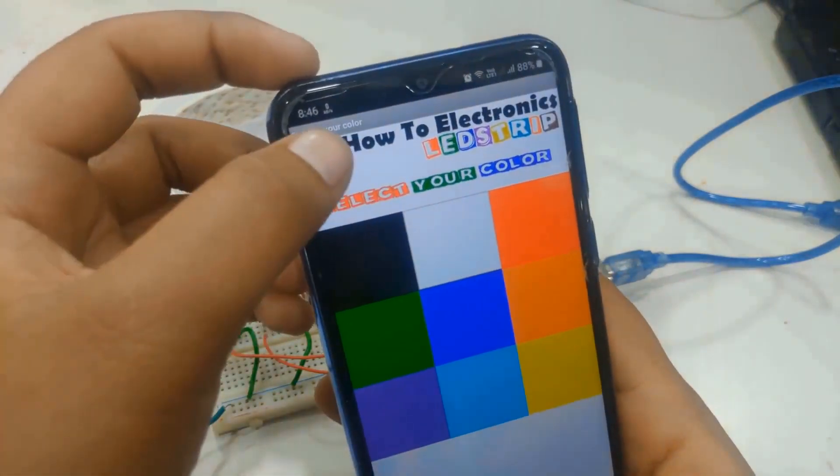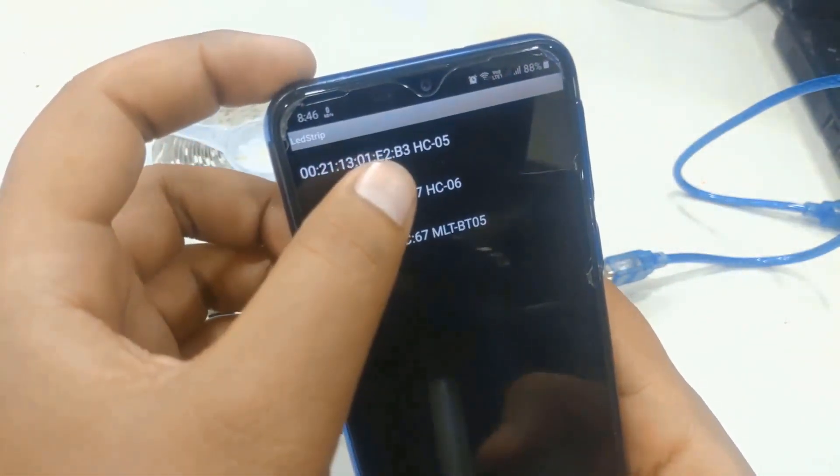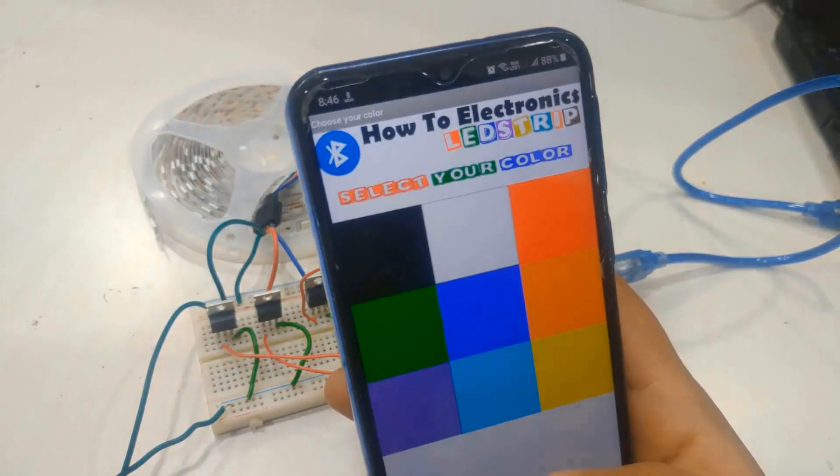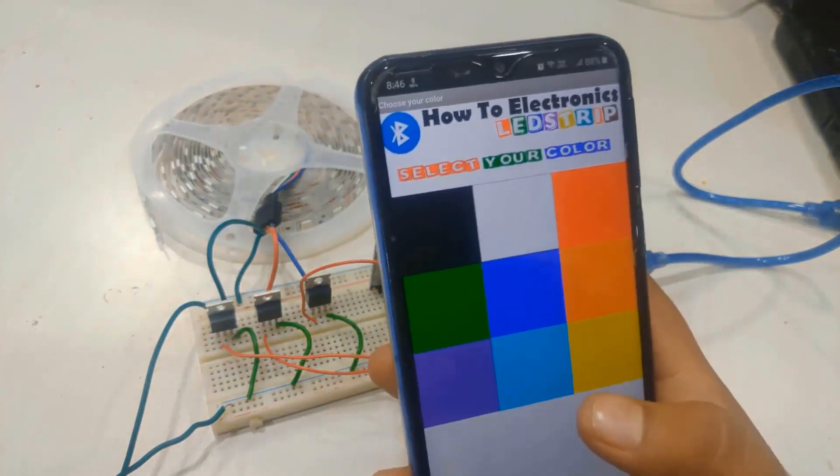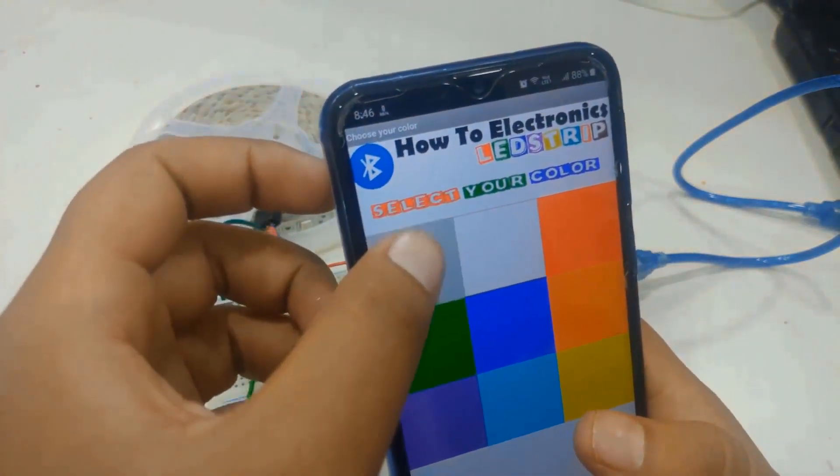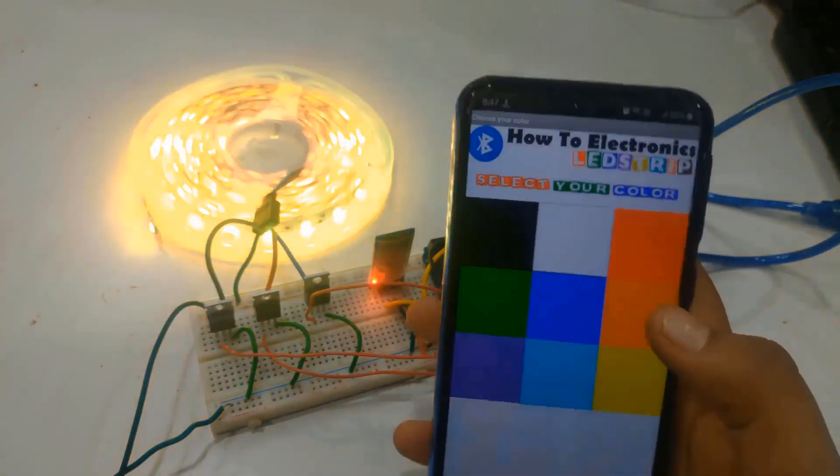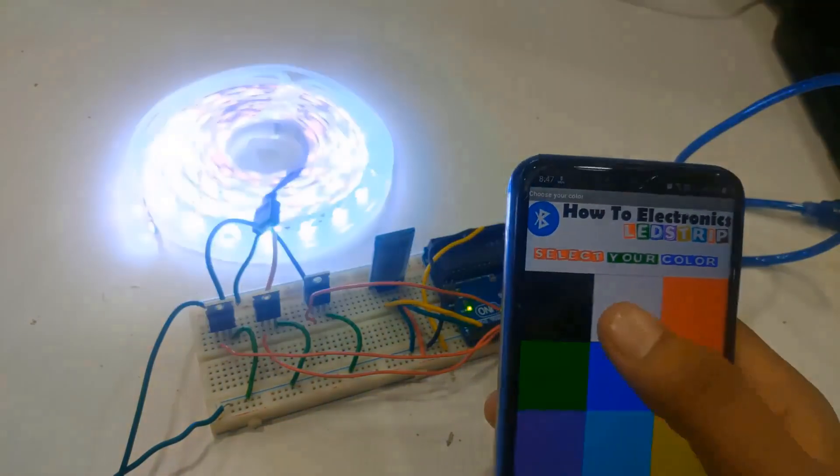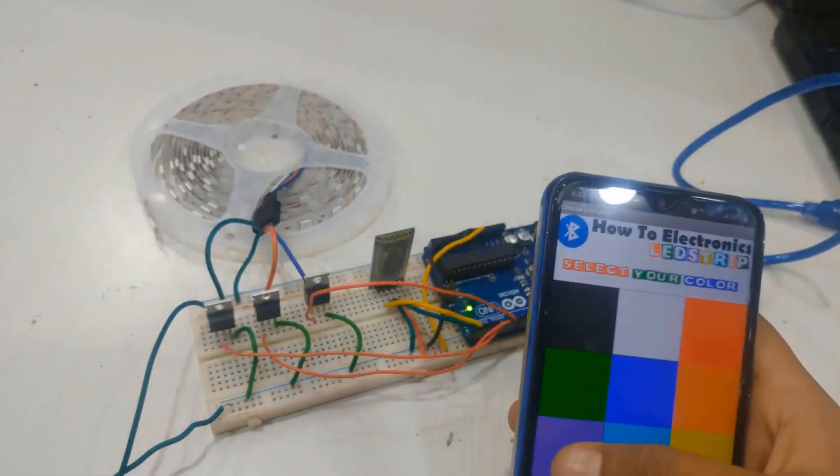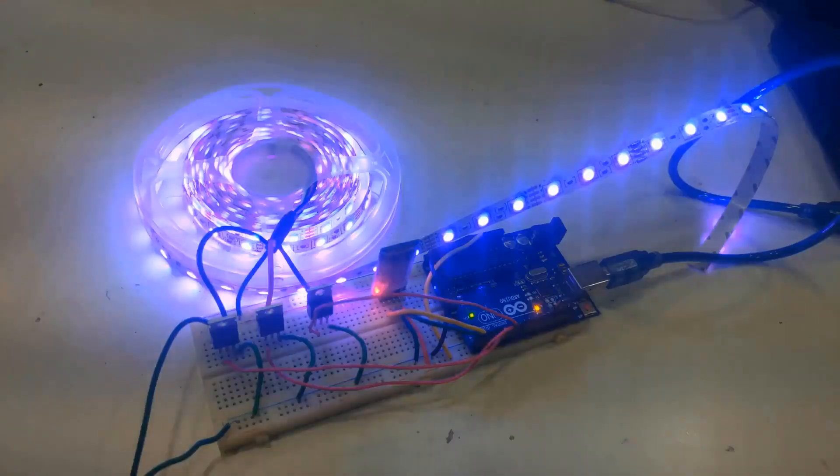Click on this module and then connect to the HC-06. Now here are nine different colors. Black is for turning off. If you click light blue, it will give light blue color, white for white, orange for orange, and red for red. You can control the color whatever you like.